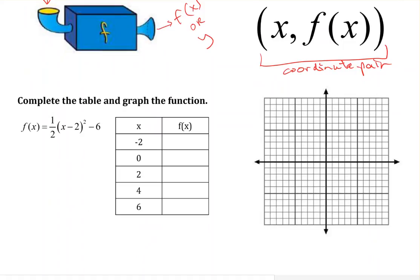So when we are given a function, one option to graph a function is always to create a table. Now we have practiced and learned some shortcut ways to graph functions, but this is always a default way to approach it. If I want to figure out where to put the coordinate when x is negative 2.